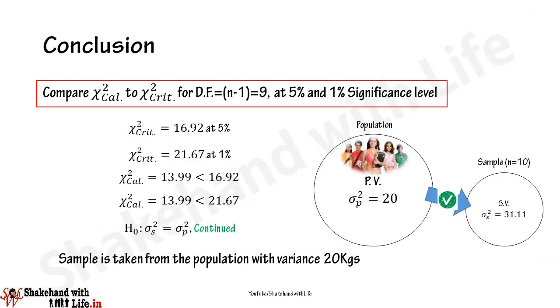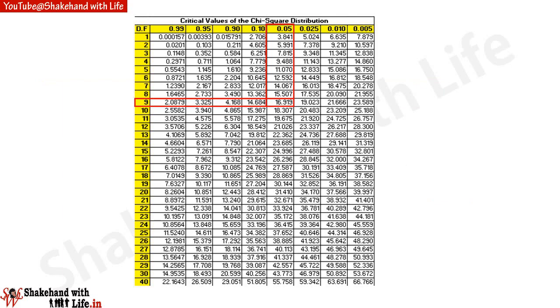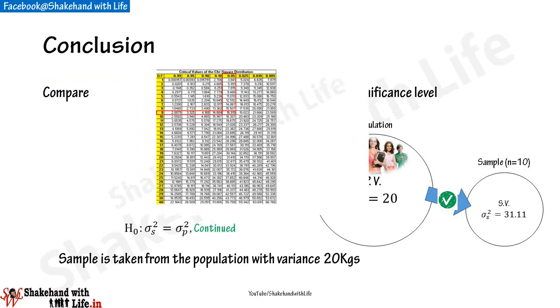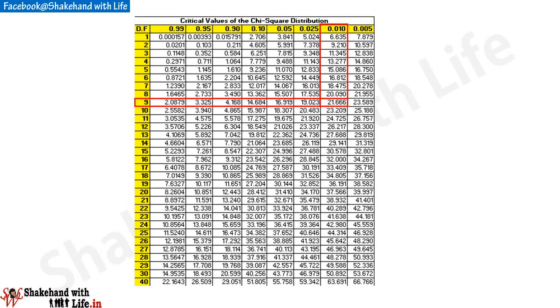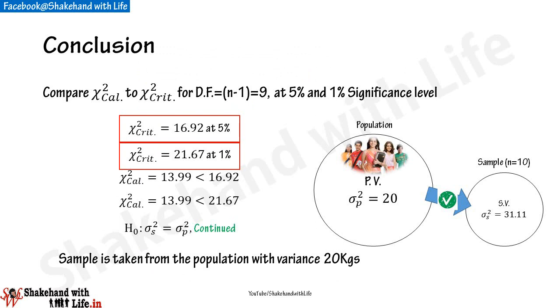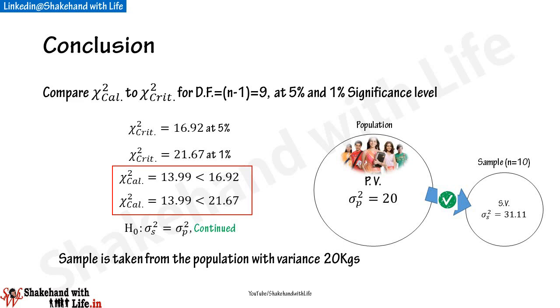To conclude whether the null hypothesis should be rejected or continued, we compare the calculated chi-square value with the critical value from the chi-square distribution table for degrees of freedom (n − 1) = 9. The critical value at 5% significance level is 16.92, and at 1% significance level it is 21.67. The calculated value of 13.99 is less than both critical values.